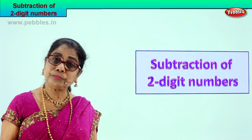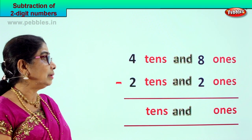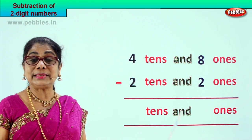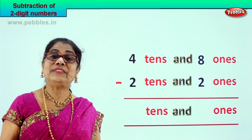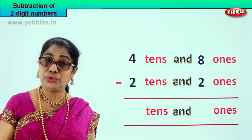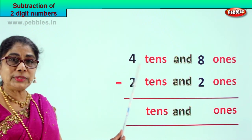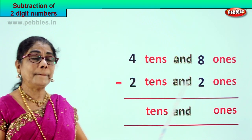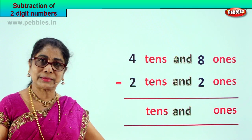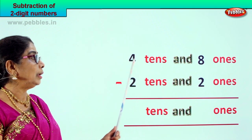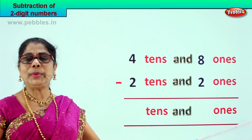Shall we look at our first sum? When you concentrate, look at the number and do it correctly. This is a very interesting sum because we are putting it in tens and ones order. All you need to do is look carefully. Read together: 4 tens and 8 ones minus 2 tens and 2 ones. So we are going to take away — 48 minus 22. What will we get?